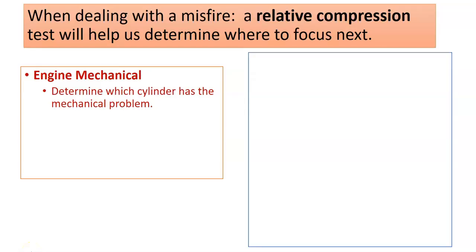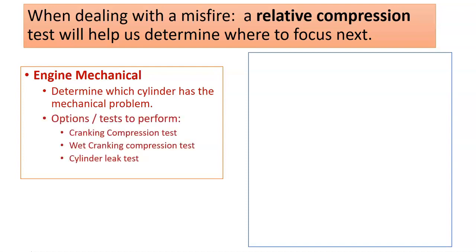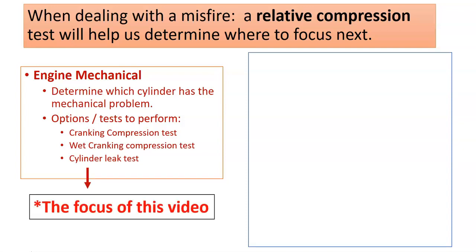When a relative compression test has helped us identify an engine mechanical problem, we have options to perform other tests: a cranking compression test, a wet test, and our cylinder leakage test. These tests help us confirm engine mechanical condition, which is going to be the focus of this video.